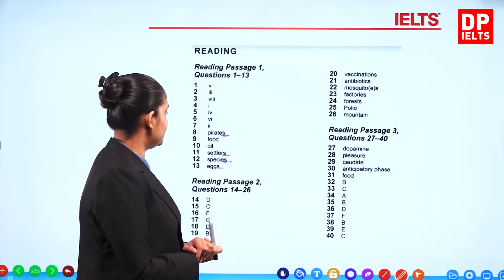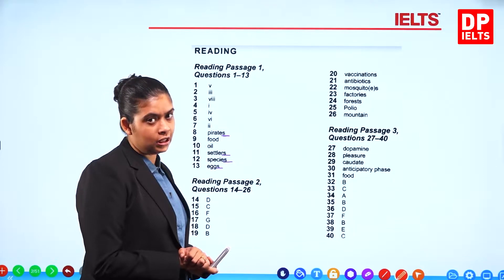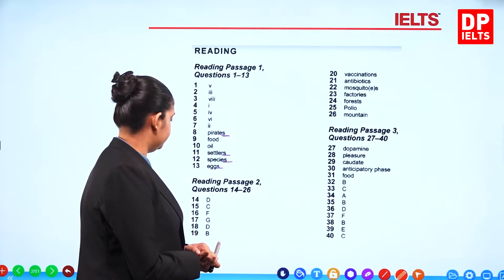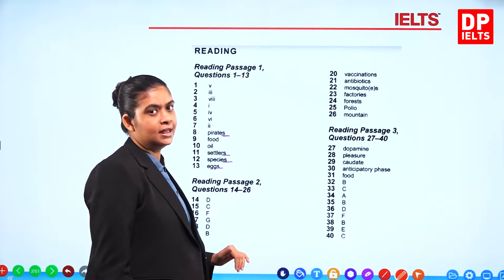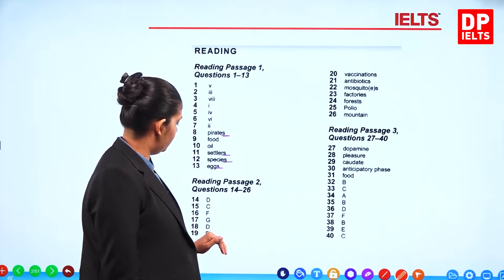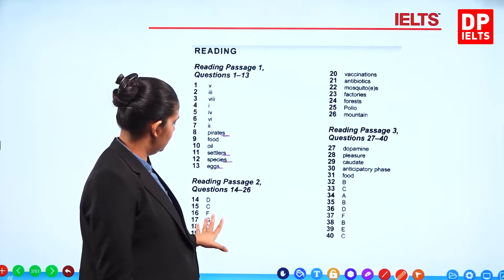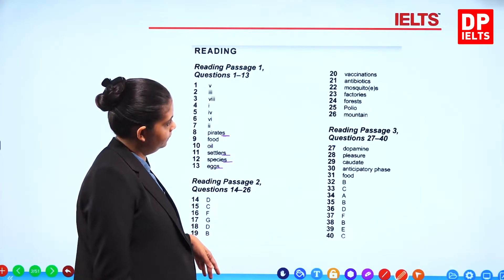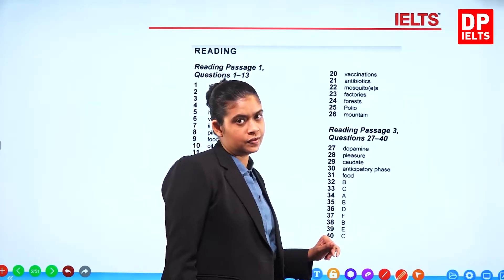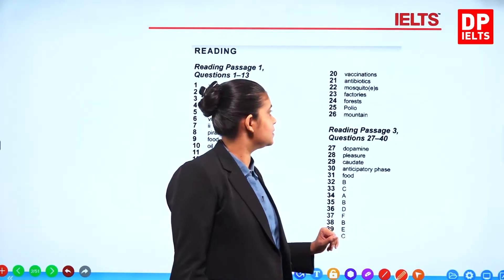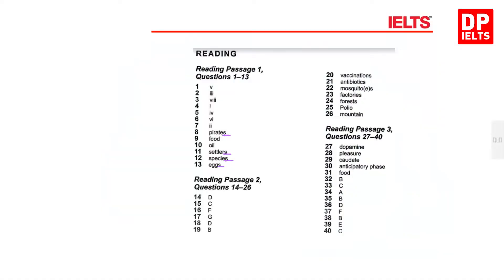Reading Passage 2, questions number 14 to 26. The answers are: D, C, F, G, D, B. Then: vaccinations, antibiotics, mosquitoes — when you are writing mosquitoes you can write O-S or O-E-S, either way is fine. Then: factories, forests, polio, mountain.